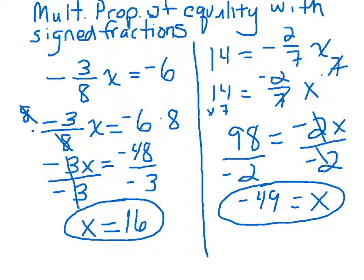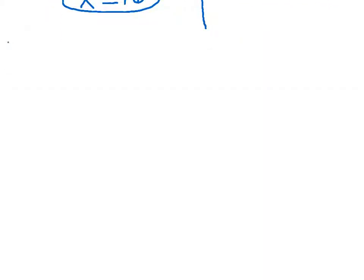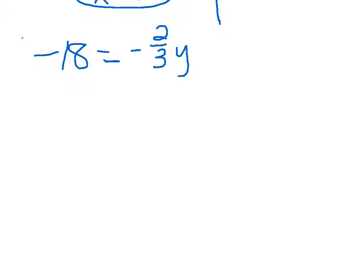All right. All right, I'm not sure if I can add another screen while it... All right, so here's the problem that I want you to work on. Again, it's, let's see, it's negative 18 equals negative 2 thirds. I will use y this time just to make it interesting. So why don't you write that down, hit pause right now.